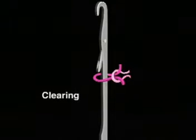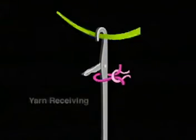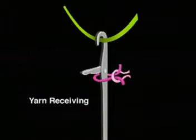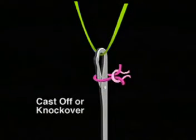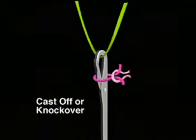...drops below and clears the latch. As the needle moves down, it receives the new yarn to begin forming a new stitch. The latch is knocked over by the old loop and this old loop is cast off.